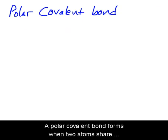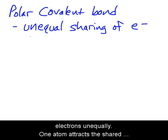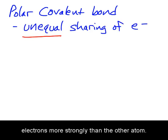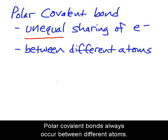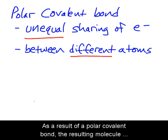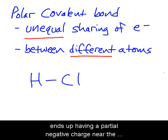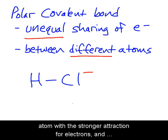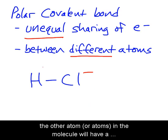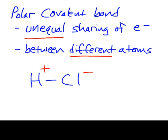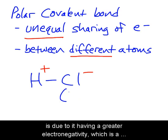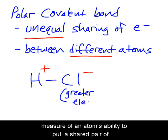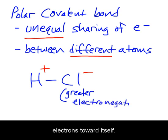A polar covalent bond forms when two atoms share electrons unequally — one atom attracts the shared electrons more strongly than the other. Polar covalent bonds always occur between different atoms. As a result, the molecule ends up having a partial negative charge near the atom with the stronger attraction for electrons, and the other atom or atoms will have a partial positive charge. This stronger attraction is due to greater electronegativity, which is a measure of an atom's ability to pull a shared pair of electrons toward itself.